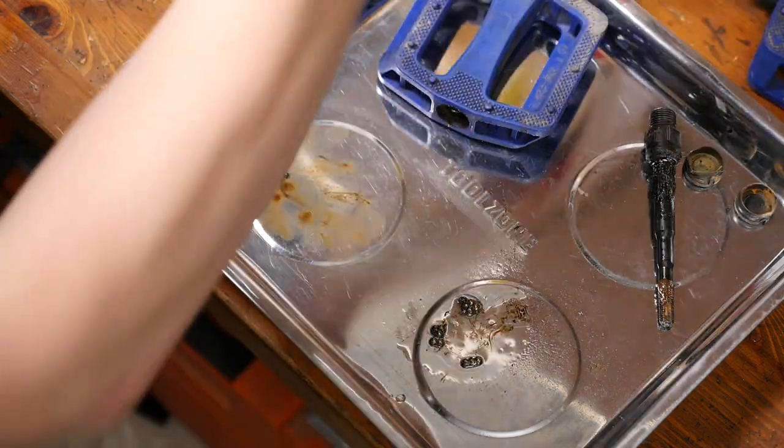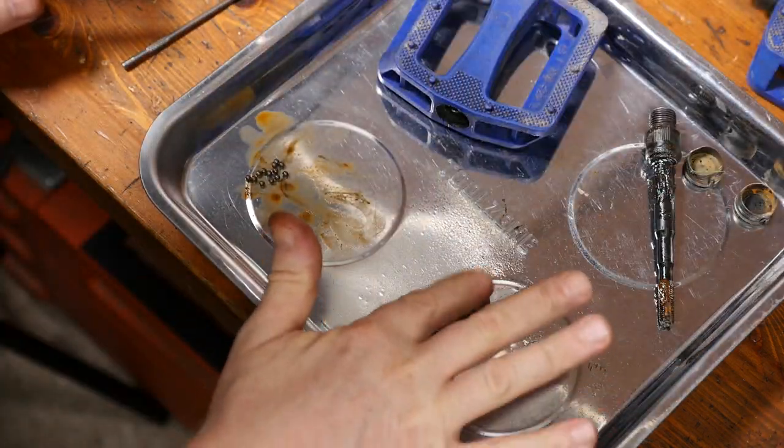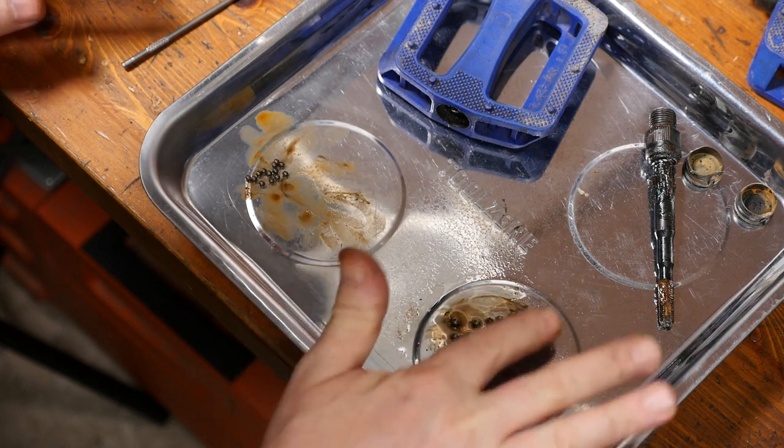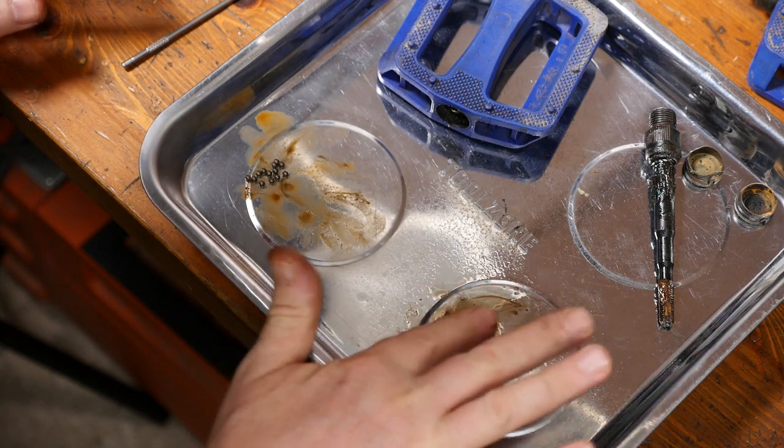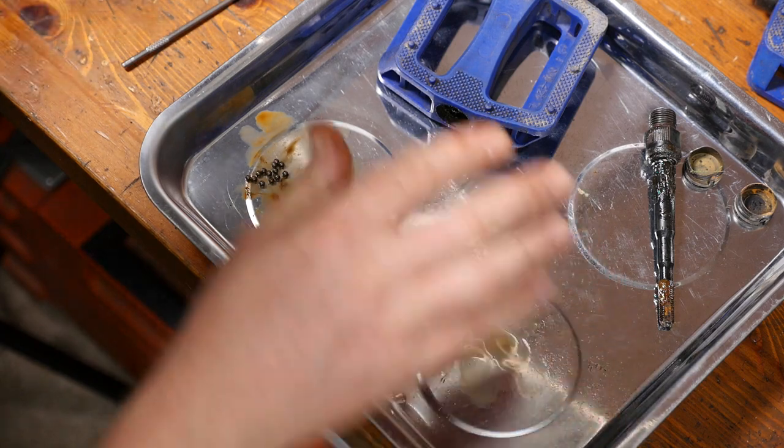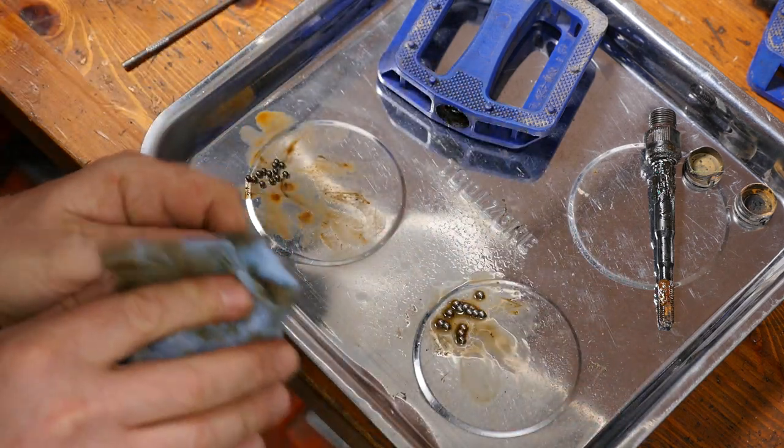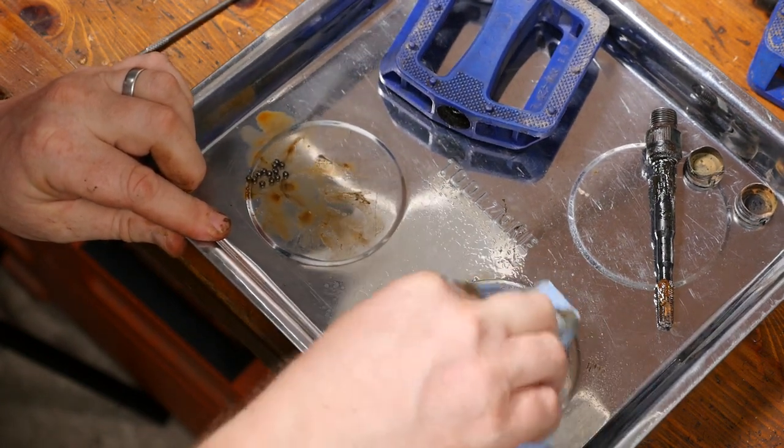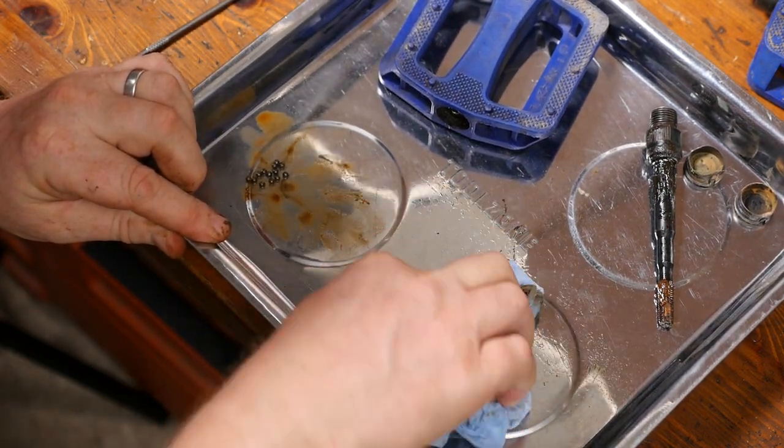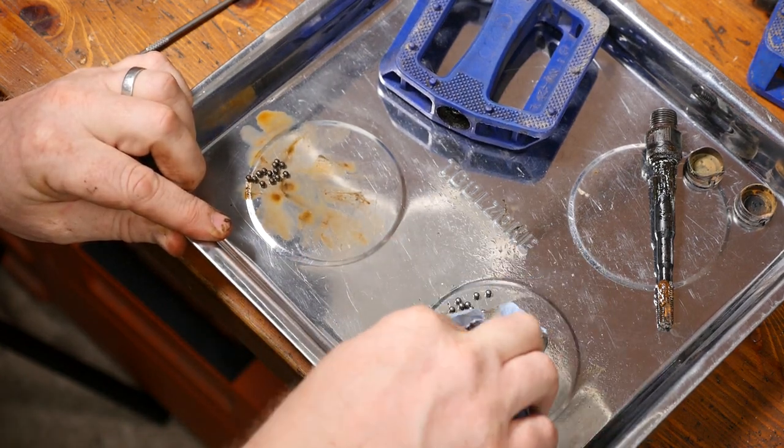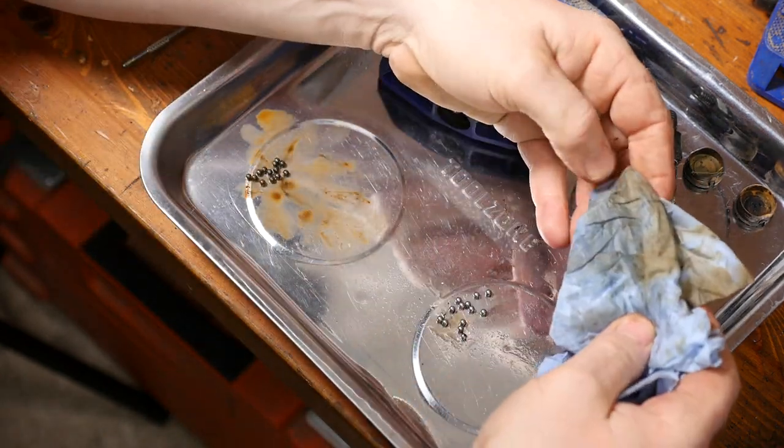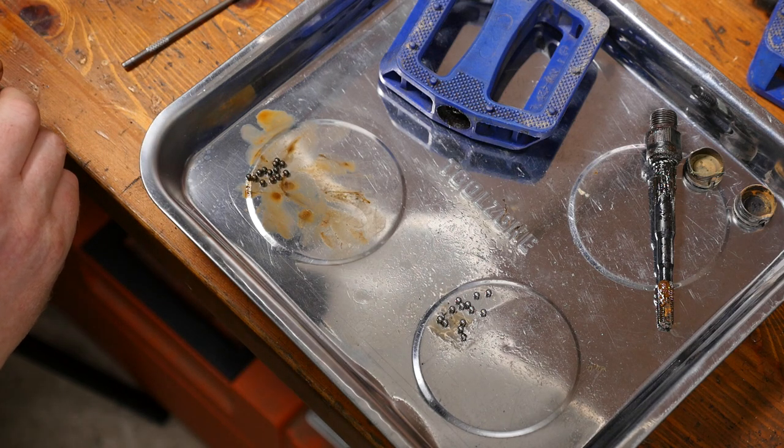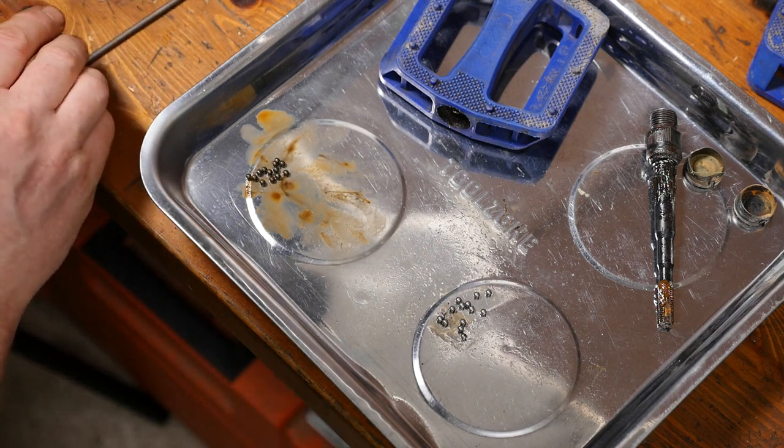So I'll give them another little squirt of paraffin because paraffin is quite a gentle cleaner, just to clean those up and get some of the grit off. And then just dab them. Again you've got to be very careful you don't pick the bearings up accidentally in the tissue and then lose them on the floor. So I'll check again that there's still 13 there.